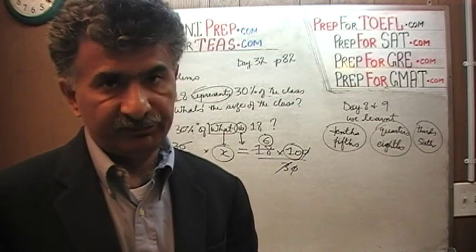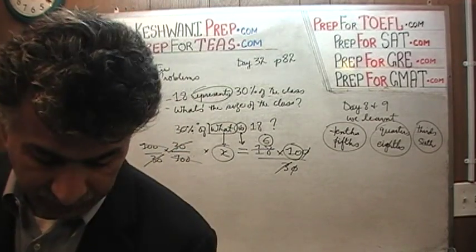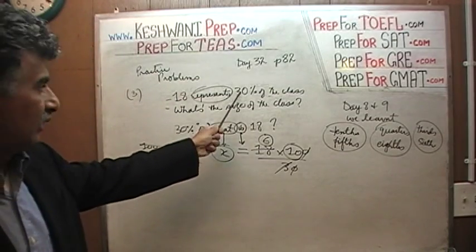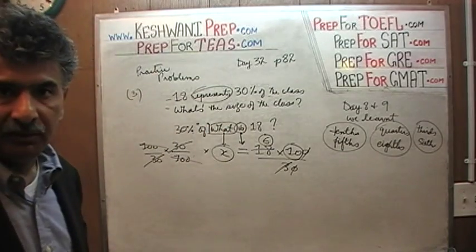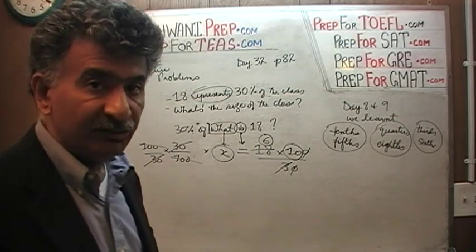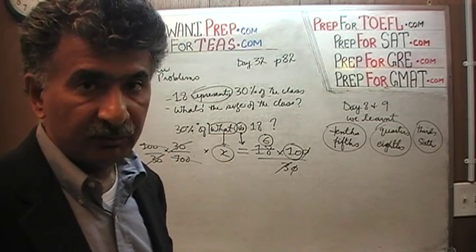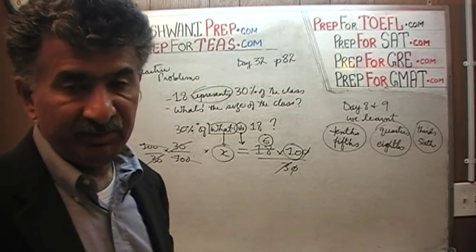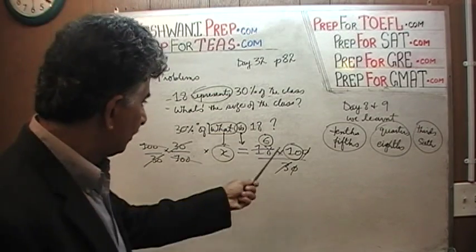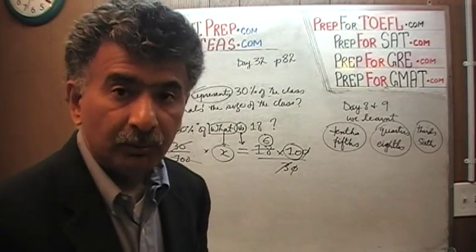Just ask yourself: if 18 represents 30%, then a third of that must be 10%. A third of 18 is 6, so 6 is 10%. If 10% of something is 6, then 100% must be 10 times that amount, which is 60 — exactly what we found before. I'll see you tomorrow. Bye now.